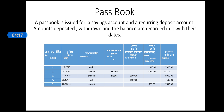Another important thing is the passbook. A passbook is issued for a saving account and a recurring deposit account. The amount deposited, withdrawn, and the balance are recorded in it with that day's date. There is a specimen shown here. You can see that on 2nd Feb 2016, cash of 1,500 has been deposited, and on 8th Feb 2016, a cheque of 5,000 has been deposited. All these entries are recorded in the passbook.